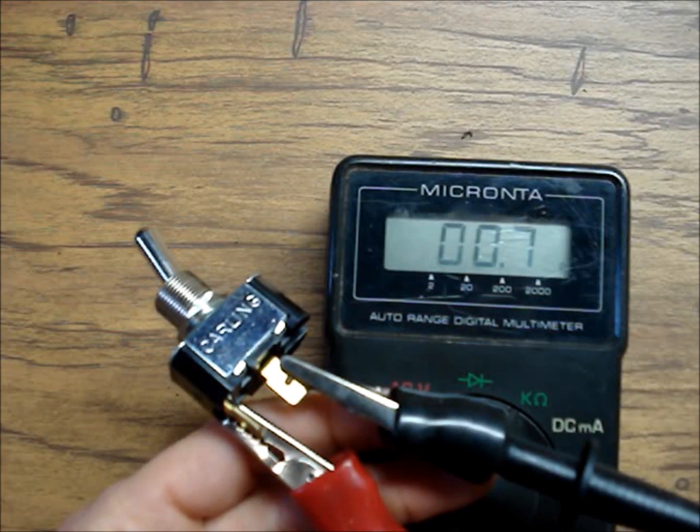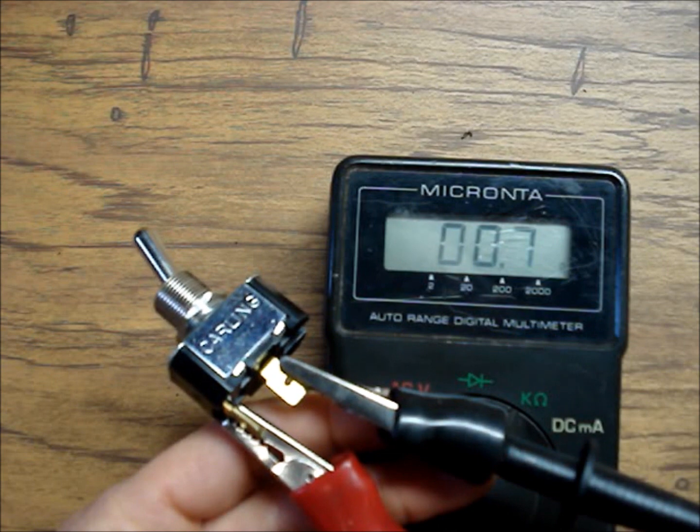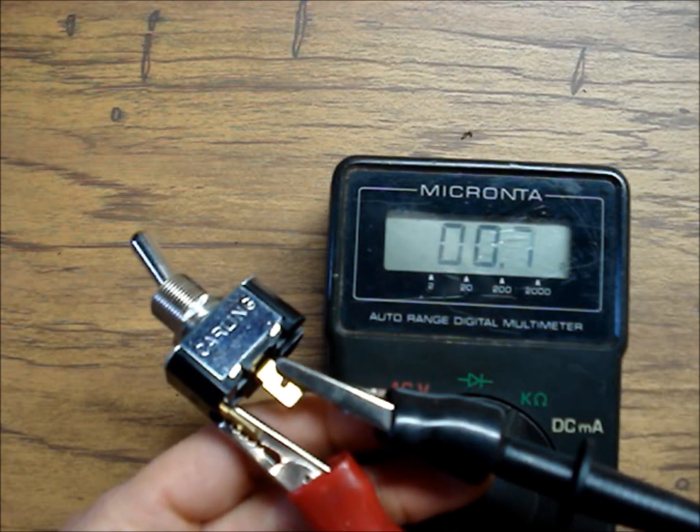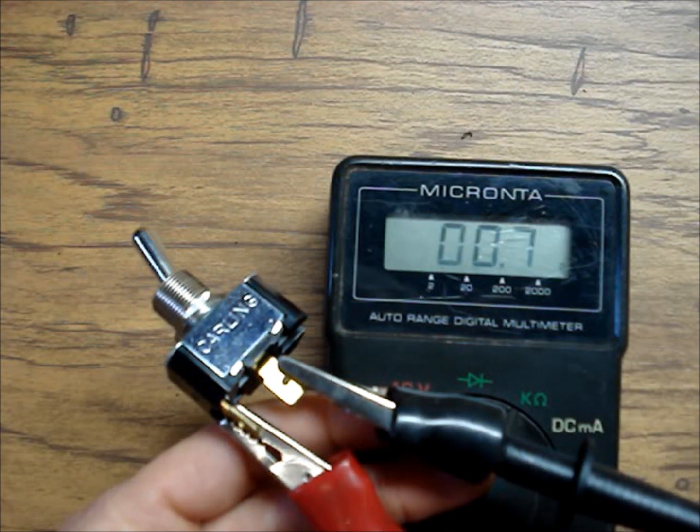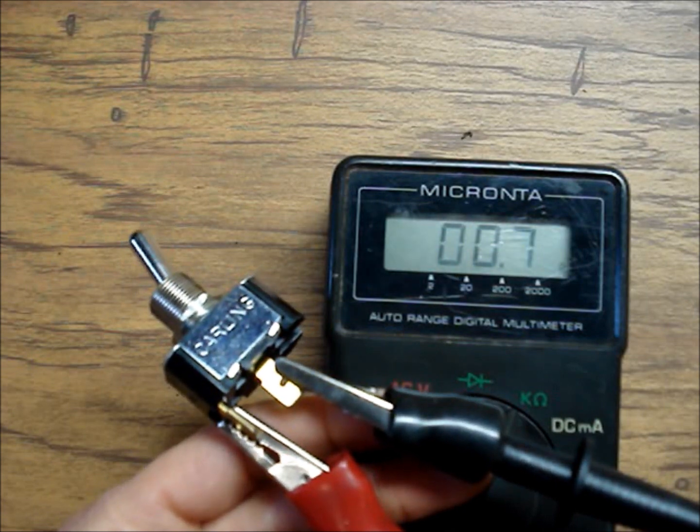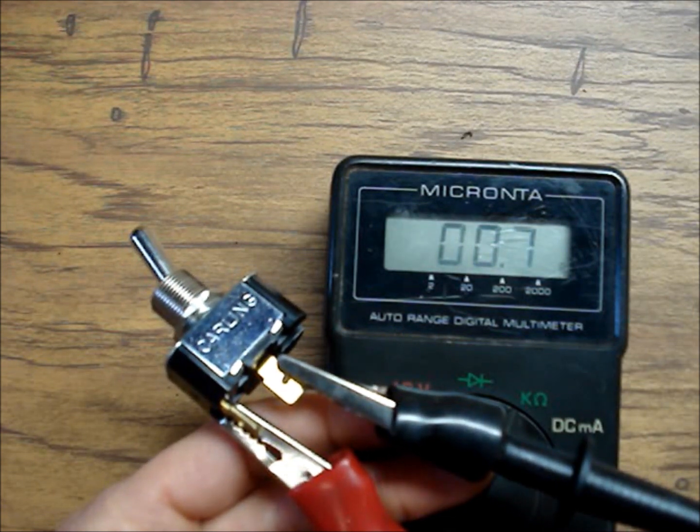I'm reading across a closed switch. This would be considered checking for continuity because we're checking from point to point on a conductor.